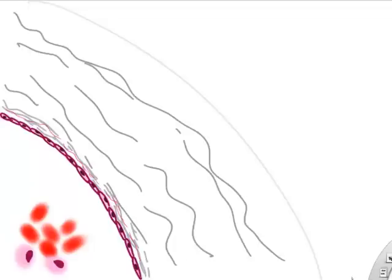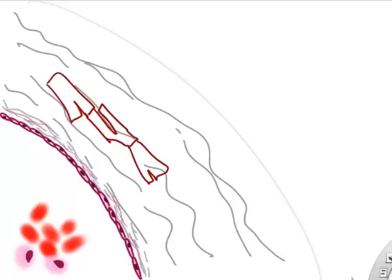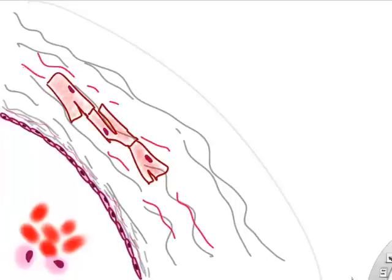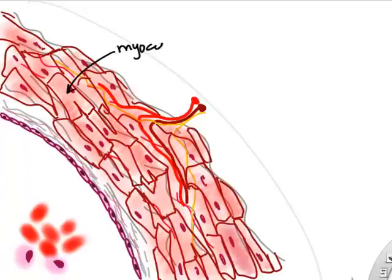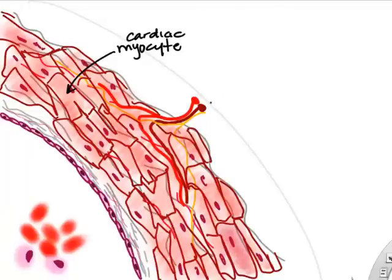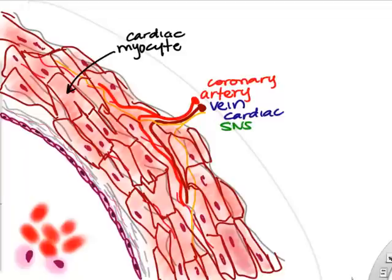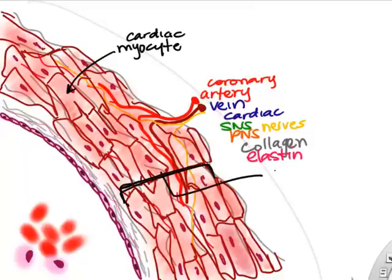The middle structure of the heart wall consists mostly of connective tissue and cardiac myocytes with actin and myosin, all interconnected and supported by collagen and elastin. We also need blood vessels — coronary arteries and cardiac veins — and both parasympathetic and sympathetic neurons. This middle layer of heart cells in connective tissue is called the myocardium.